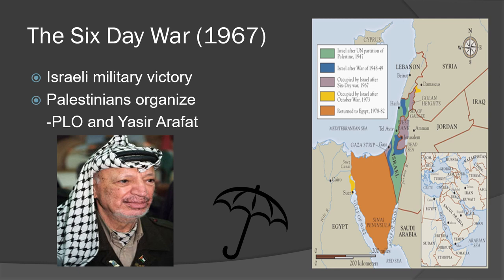Arafat was an extremely controversial figure — a freedom fighter to Palestinians, a terrorist to Israelis. Next, you will watch scenes 5 and 6 from 'The Road to 9/11.' The first discusses the Israeli-Palestinian conflict, and the second discusses Nasser.